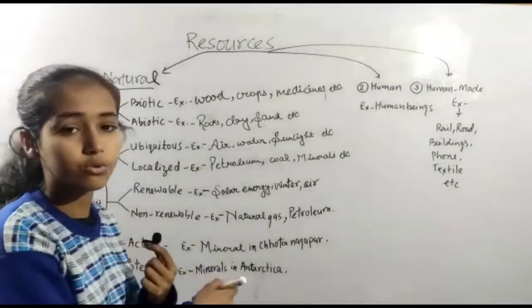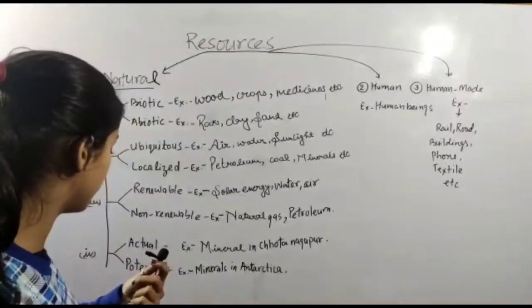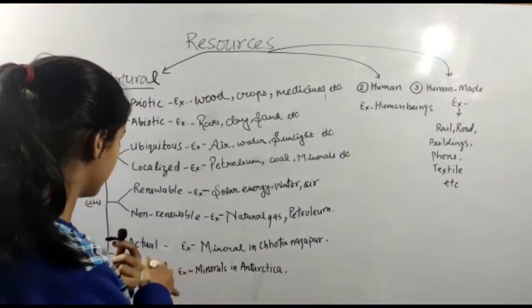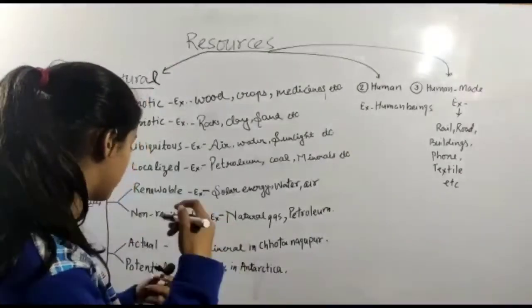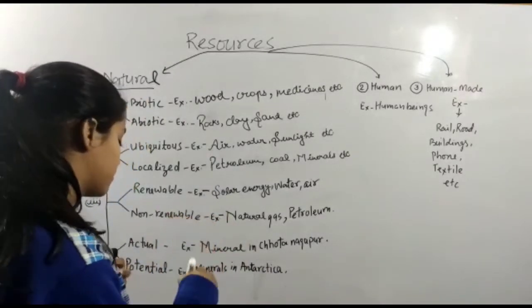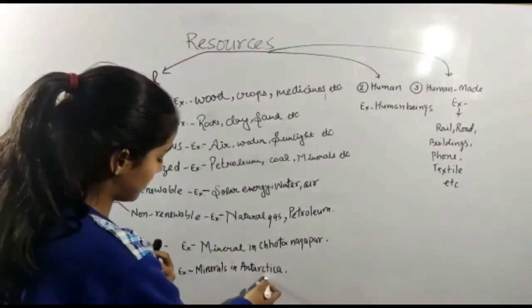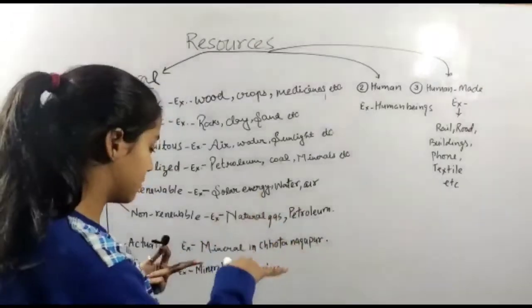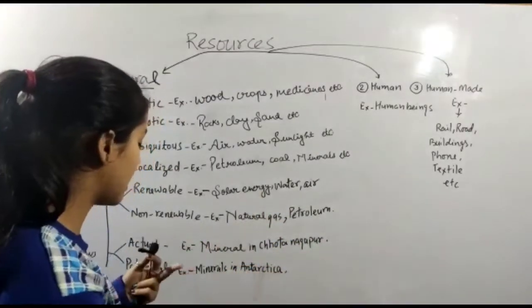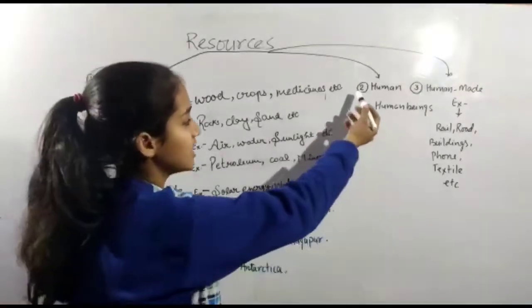Then potential. These sources are known to us but we have no sufficient technology and knowledge of these sources. For example, minerals in Antarctica - we don't know about them but we have no sufficient technology for them.